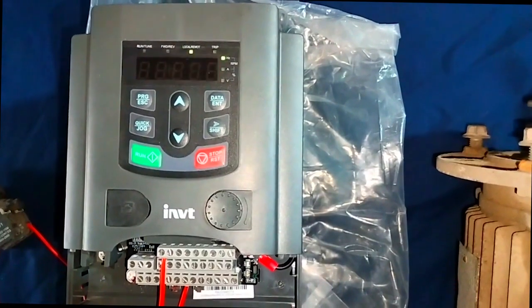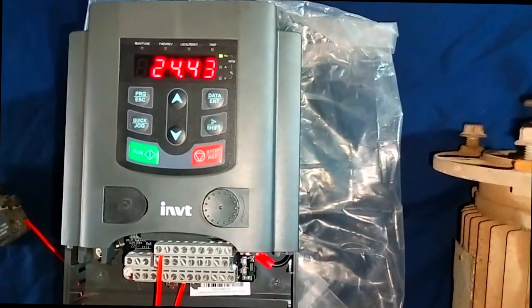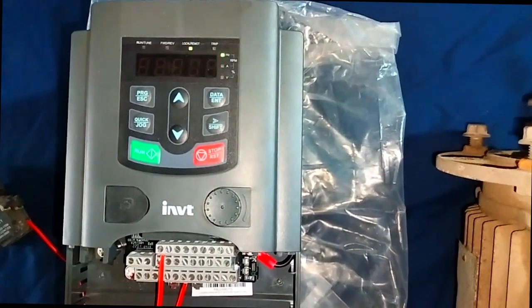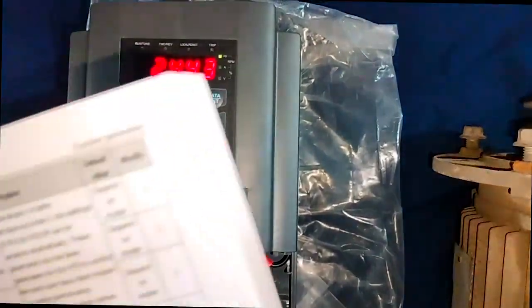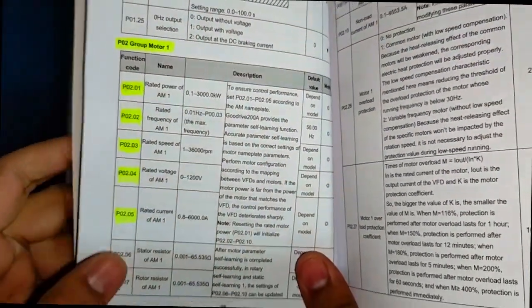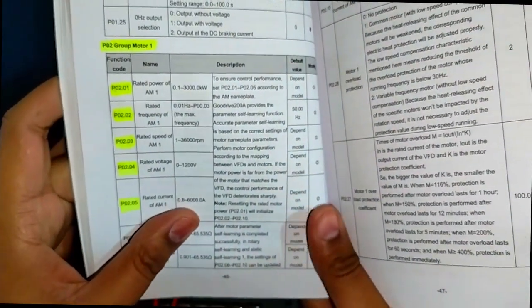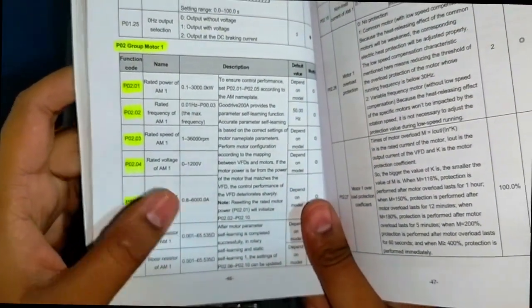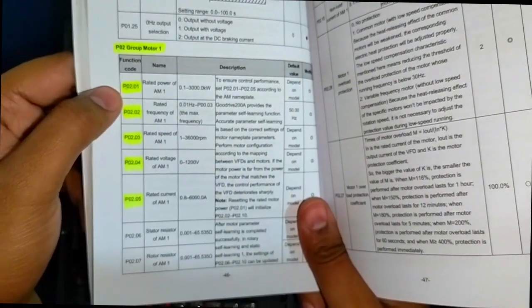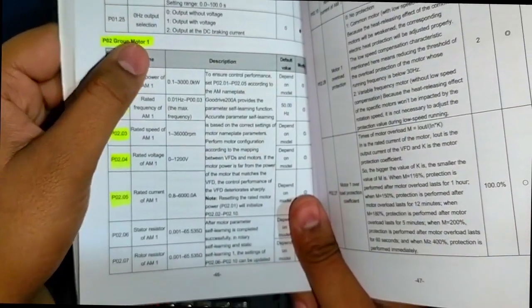welcome to our VFD tutorial. We will see how to add motor parameters which are necessary to run the motor. These parameters need to be added to the VFD. First of all, the group is P02.